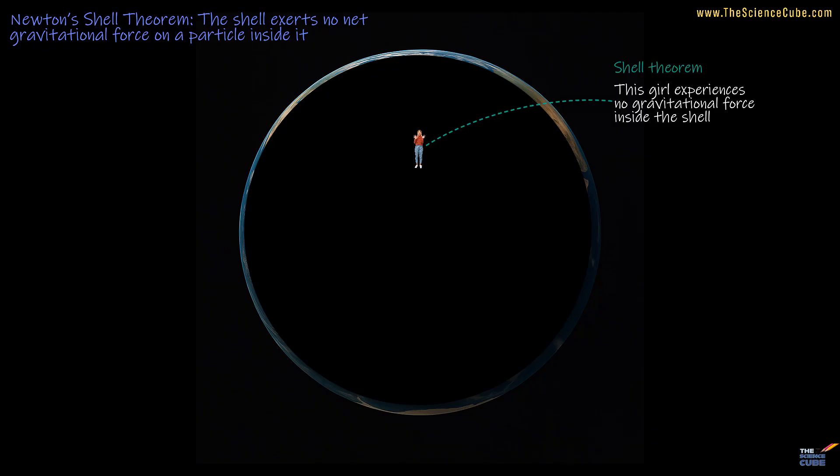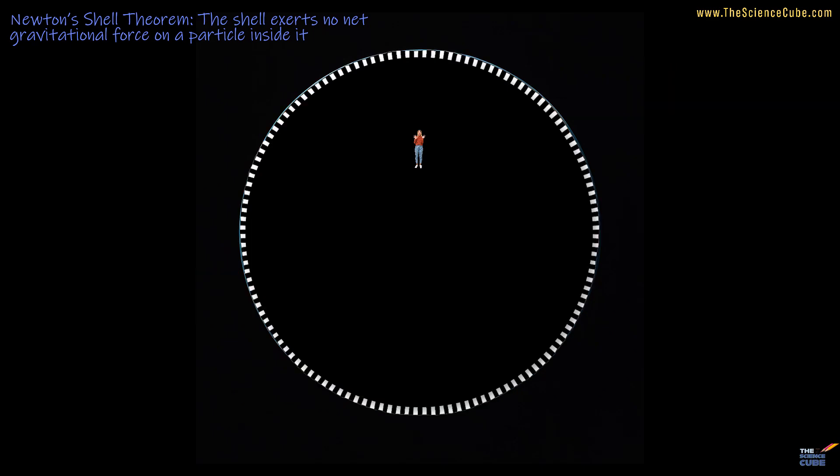This is true only if the shell is perfectly symmetrical and the particle lies entirely within the shell. If the particle were even slightly outside the shell, the net force would no longer be zero. Here is the interesting part. Each small part of the shell does exert a gravitational force on you in full agreement with Newton's Law of Gravitation. But when you add up all these individual forces as vectors, something remarkable happens.